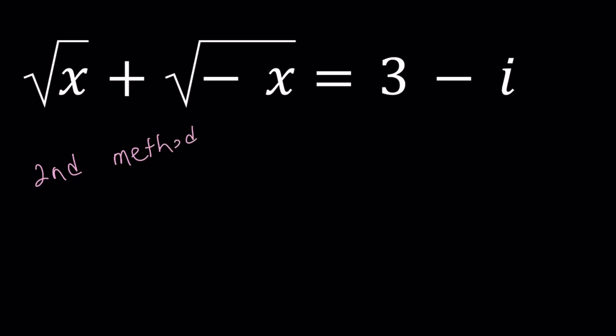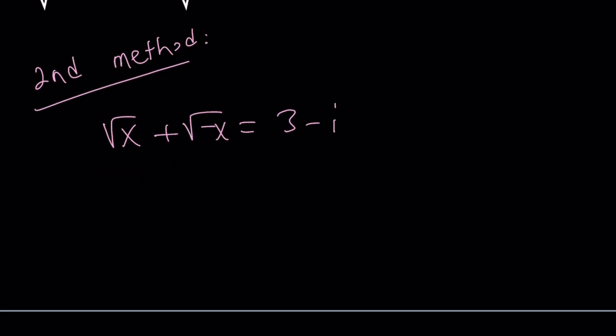Now for my second method, I'm going to do the following. We have square root of x plus square root of negative x equals 3 minus i. I'm going to write the square root of negative x in terms of square root of x. You could probably tell that this is not going to work with real numbers unless x is zero, because x and negative x cannot both be positive at the same time. And zero is obviously not a solution, so x must be non-real.